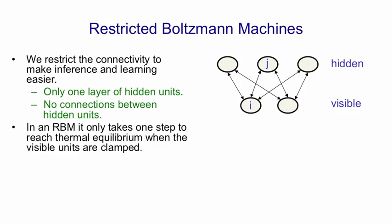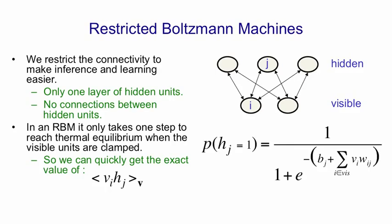The good thing about an RBM is that if you clamp a data vector on the visible units, you can reach thermal equilibrium in one step. With a data vector clamped, we can quickly compute the expected value of v_i h_j because we can compute the exact probability with which h_j will turn on, and that is independent of all the other hidden units. The probability is just the logistic function of the input it gets from the visible units. We can compute their probabilities all in parallel and that's a tremendous win.